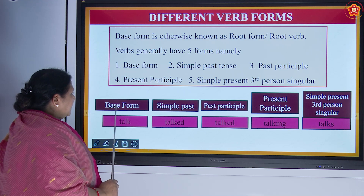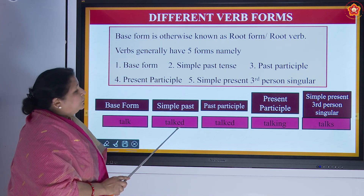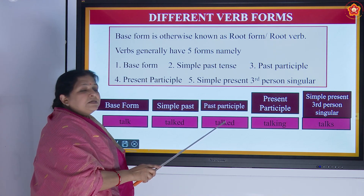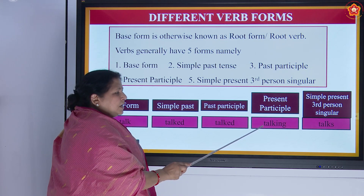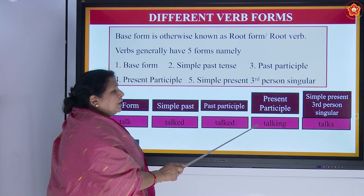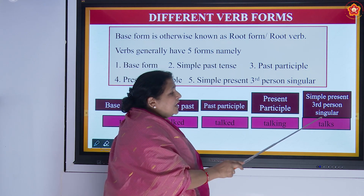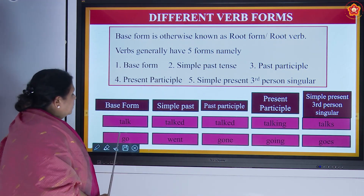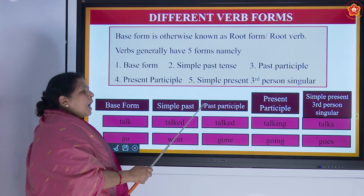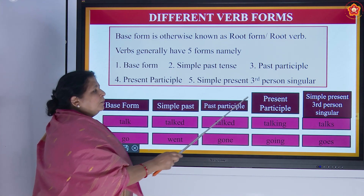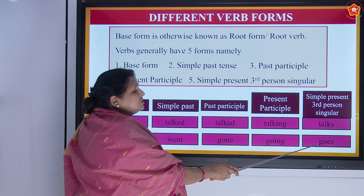Base form is 'talk,' simple past is talk plus ed — 'talked,' past participle is also 'talked,' present participle is talk plus ing — 'talking,' and simple present third person singular adds s — 'talks.' Next word is 'go.' Simple past is 'went,' past participle is 'gone' (g-o-n-e), present participle is 'going,' and simple present third person singular is 'goes' (g-o-e-s).